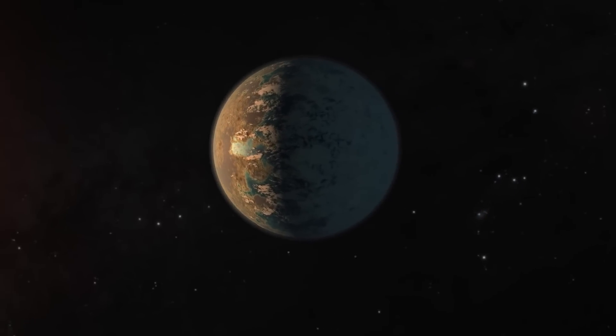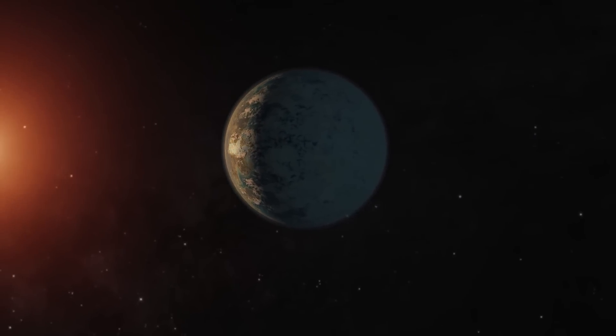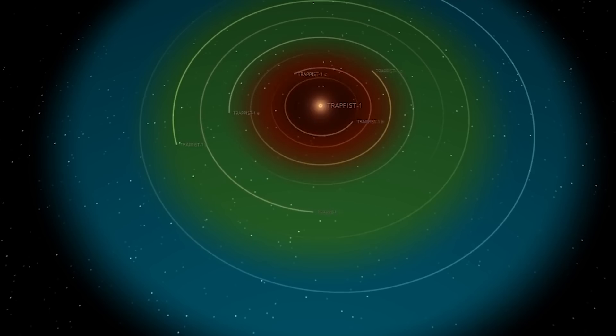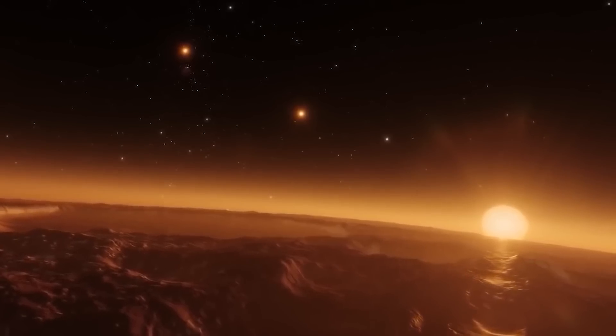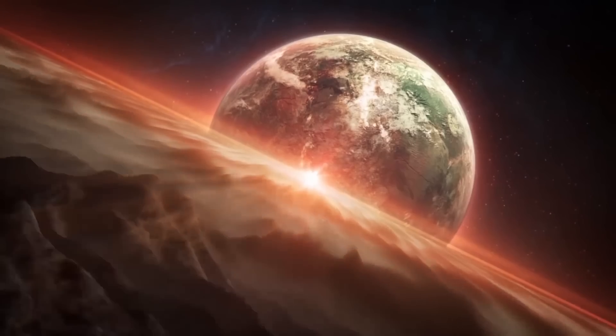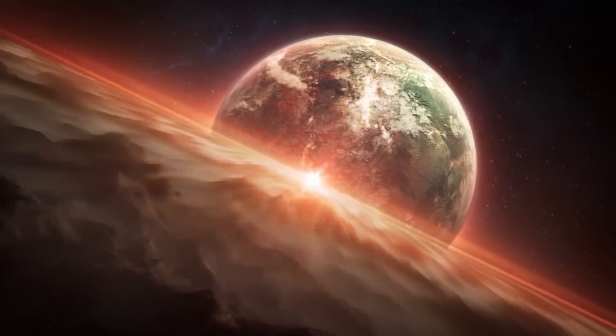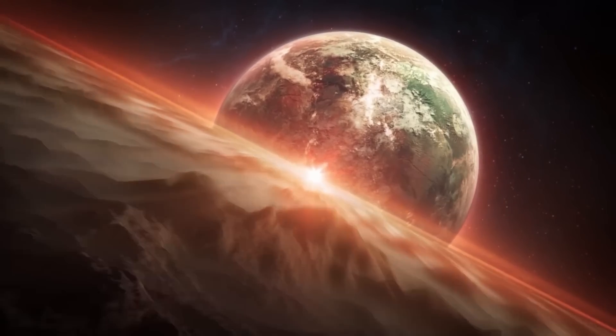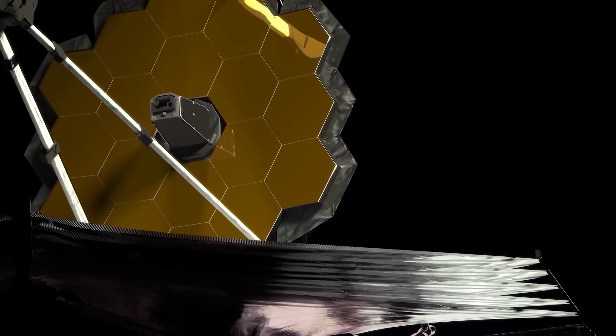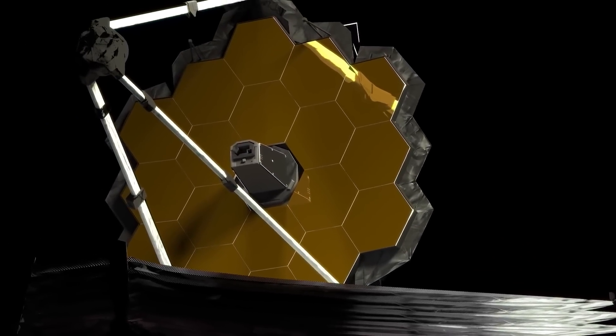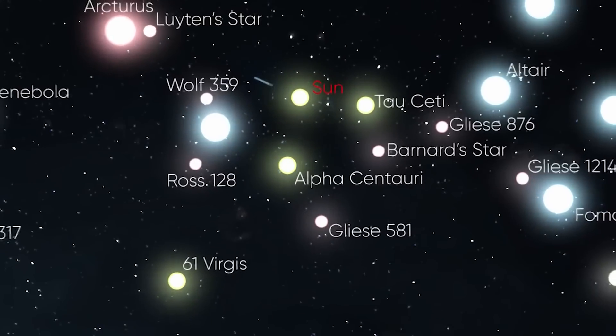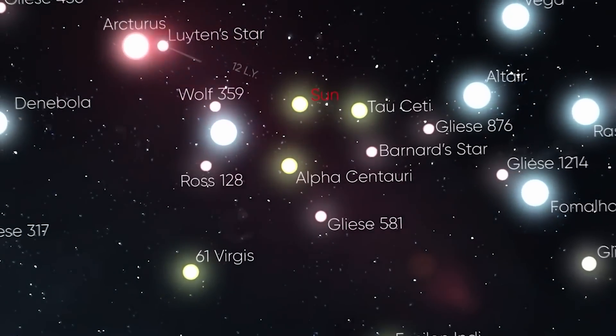When it comes to understanding planets that are not our own, there are a number of challenges. Recent theoretical work shows that the distance of a planet from its star and its composition are not the only elements influencing its environment. The distribution of land on a planet's surface has a significant impact on its potential habitability. In its first year of research, James Webb will begin exploring the TRAPPIST-1 system and it will be thrilling to learn more about these exoplanets.